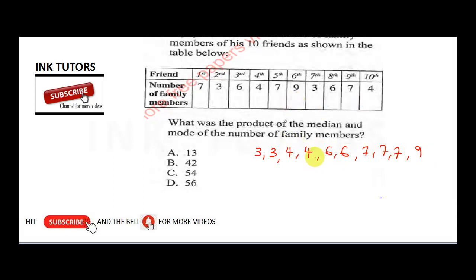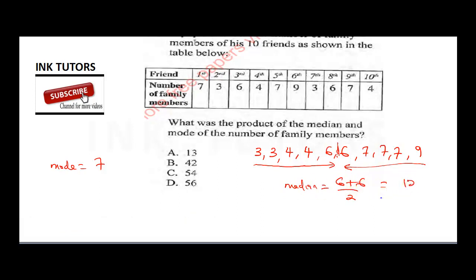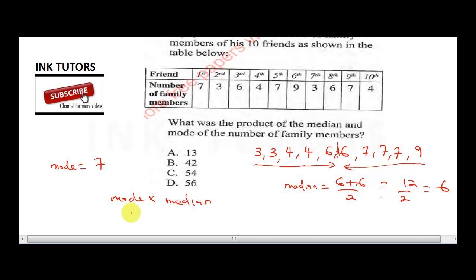Now it says, what was the product of the median and the mode? From what we're seeing, our mode is 7, which is the highest occurring number. Now our median, check the middle number. So counting from here, this is the fifth number. Counting from here, this is the fifth number. So our median lies in between. We'll take the average, which is 6 plus 6 over 2, which will be 12 over 2, which is 6. So our mode multiplied by median will be 7 times 6, and that will give 42. So 42 is the correct answer.